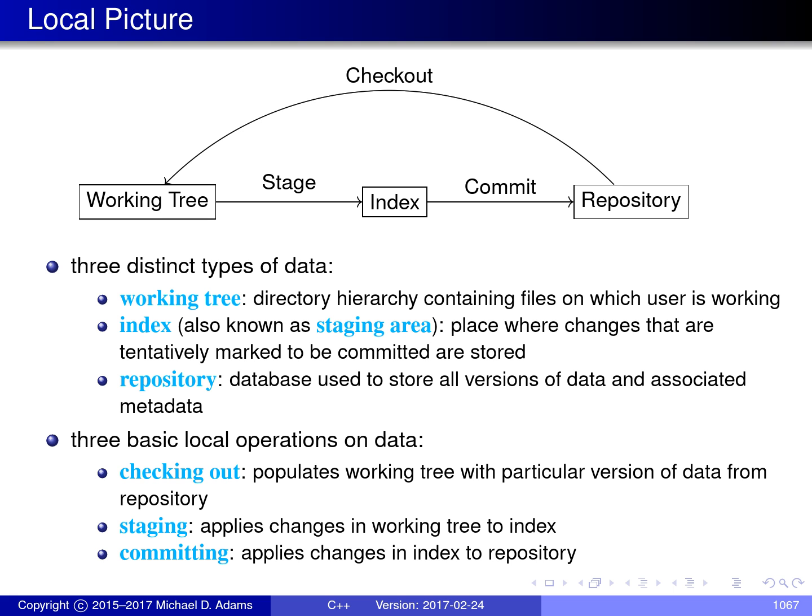From the point of view of a Git user, there are three distinct types of data upon which the user can operate. The first is the working tree — a directory tree containing all the files on which the user is working. The second is the index, also known as the staging area, where changes tentatively marked to be committed to the repository are stored. The third is the repository, which is the database used to store the directory tree under version control.